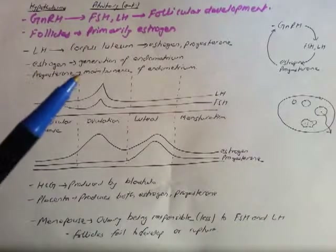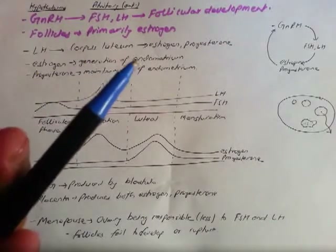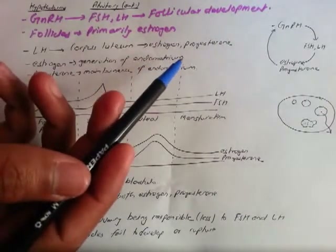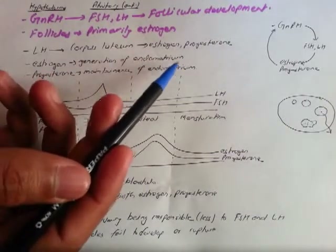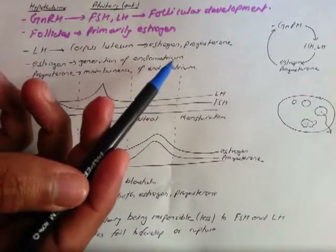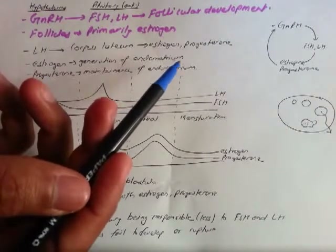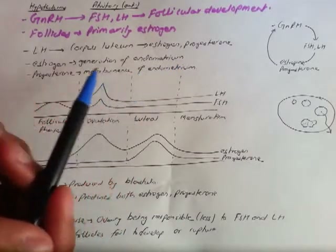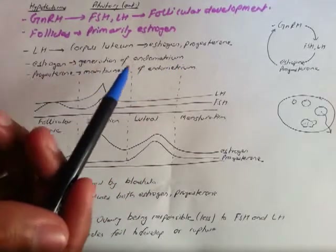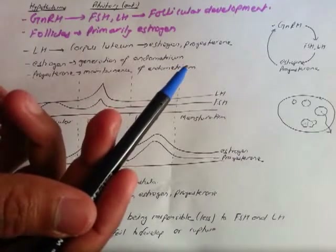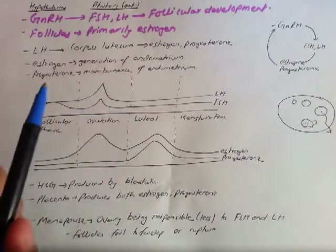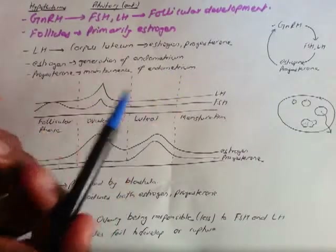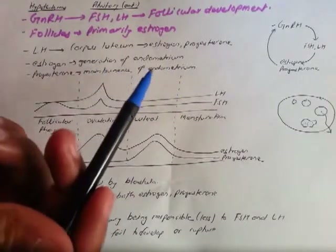Estrogen helps in the regeneration of the endometrium. The endometrium is the internal layer of the uterus, made primarily to prepare it to receive a baby. Estrogen helps regenerate the endometrium after menstruation happens, while progesterone helps to maintain the endometrium — it cannot regenerate it by itself, but it keeps it maintained.